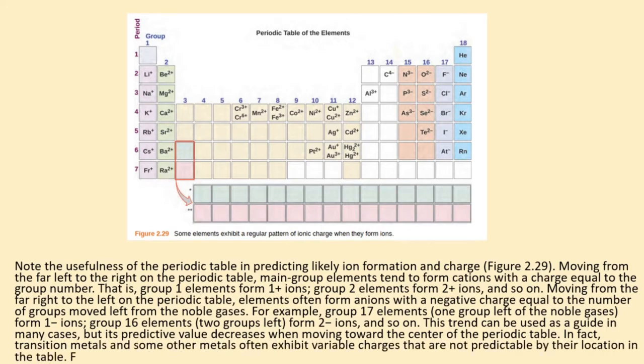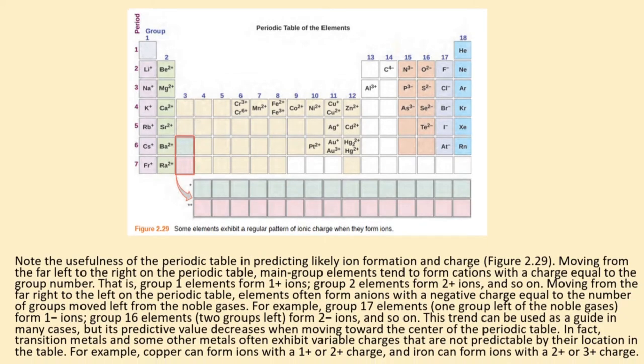This trend can be used as a guide in many cases, but its predictive value decreases when moving toward the center of the periodic table. In fact, transition metals and some other metals often exhibit variable charges that are not predictable by their location in the table. For example, copper can form ions with a 1+ or 2+ charge, and iron can form ions with a 2+ or 3+ charge.